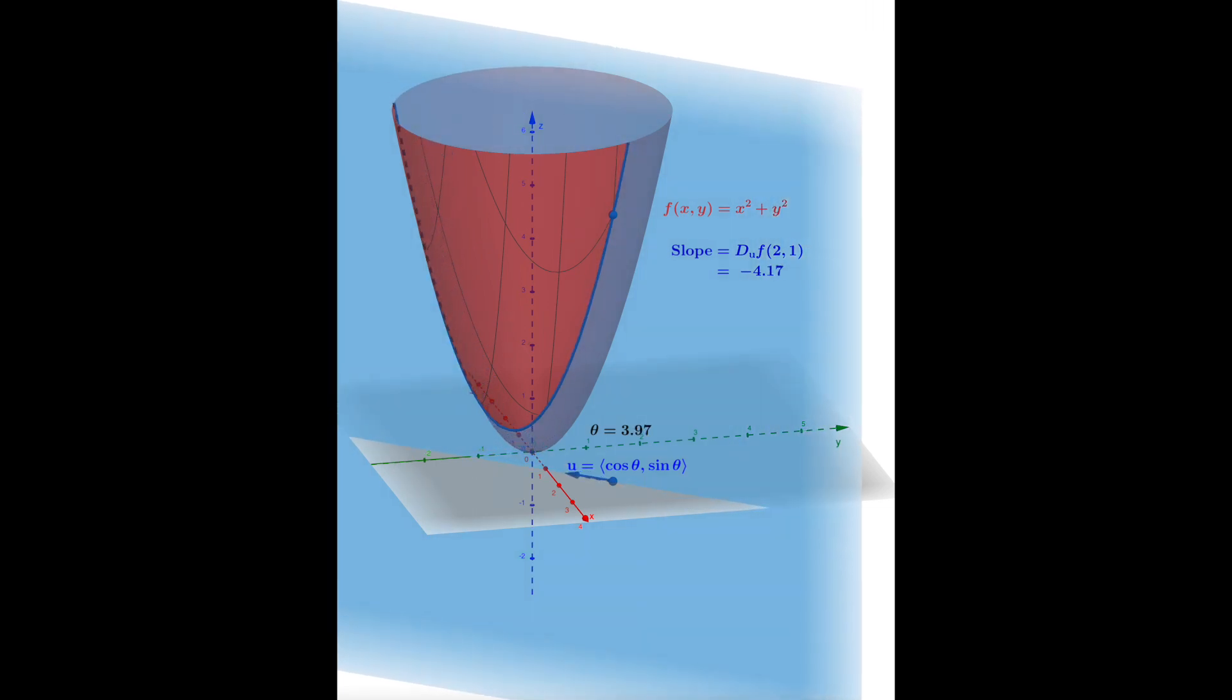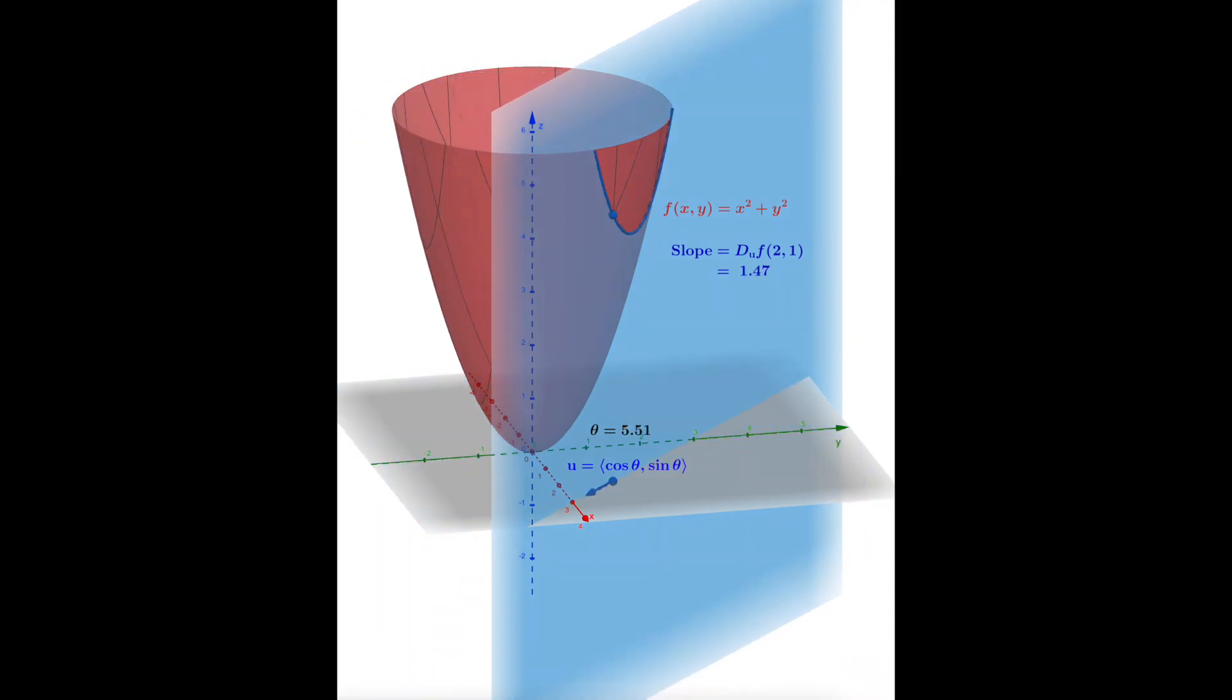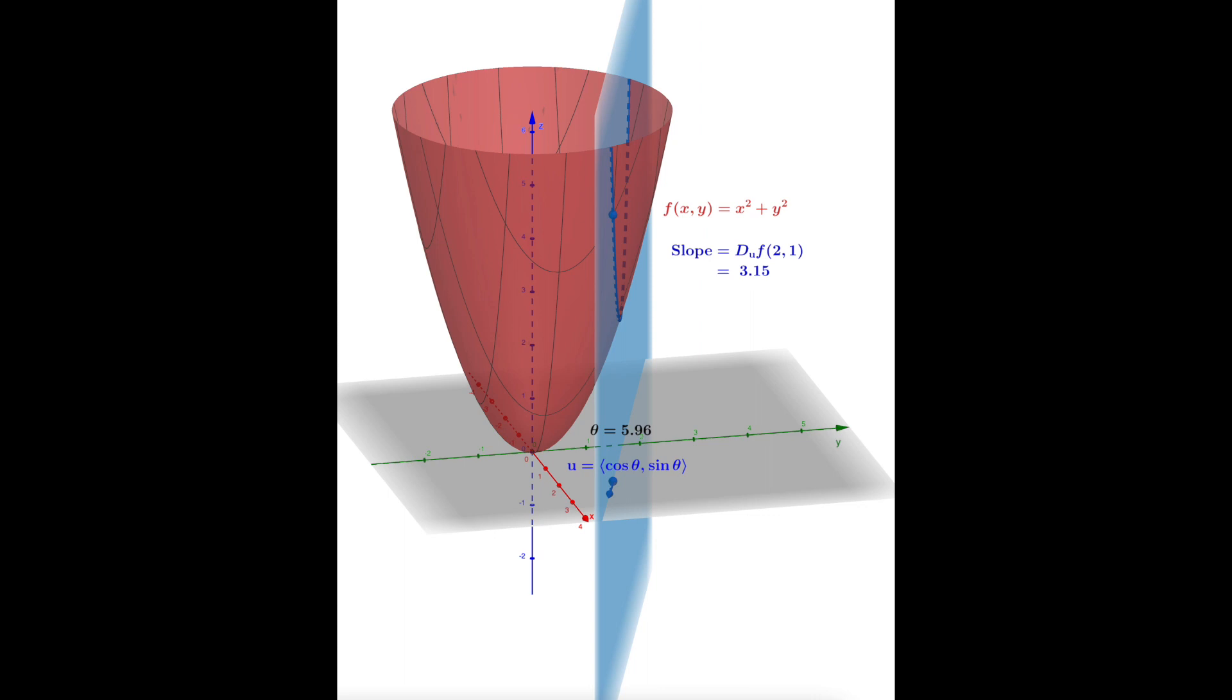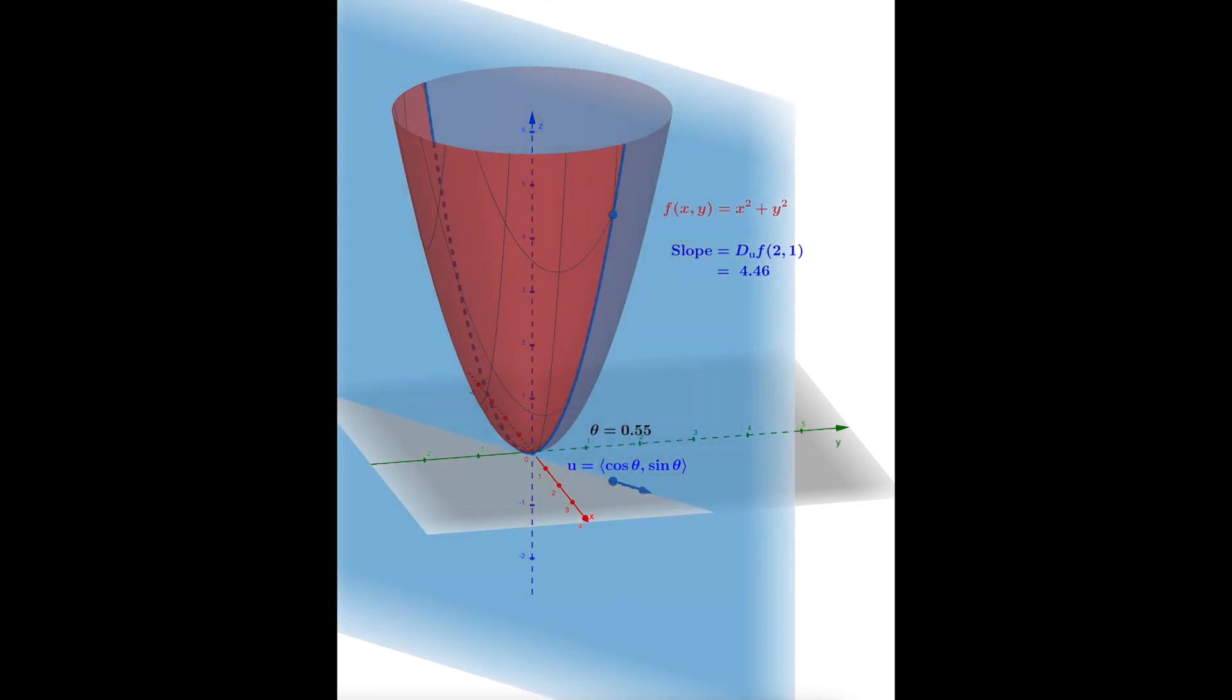What we saw is that the slope's biggest value was between 4 and 4.5, and it looks like its smallest value was between negative 4 and negative 4.5. We've just completed one full rotation. We're going to go around one more time so you can see it again—just try to track what's going on.